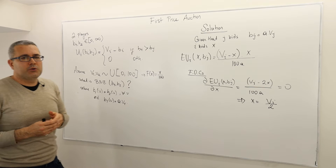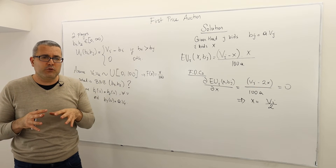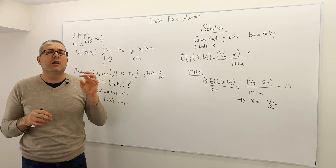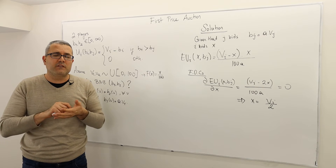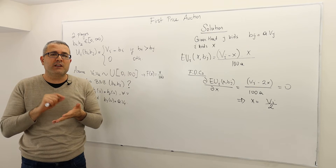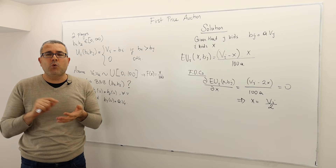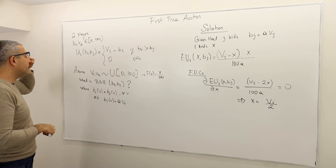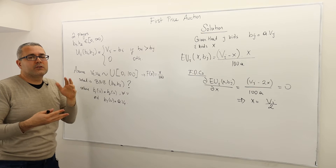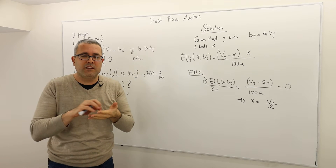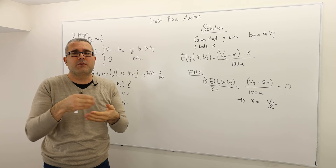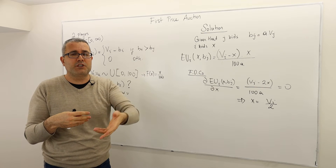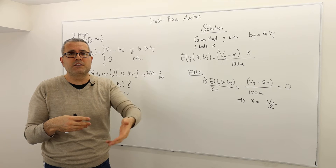So what is the first price auction? It's a simultaneous move game, so simultaneously and independently, player one and two write down on a piece of paper their price bids, B1 and B2. Those bids can be any number between zero and infinity. They write these prices into a piece of paper, they put it in an envelope and they hand it to the auctioneer, the person who sells or runs the auction.